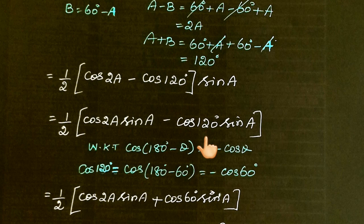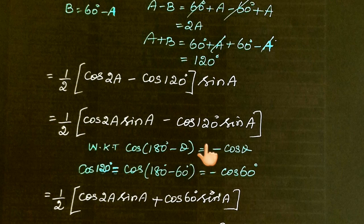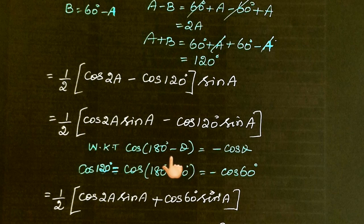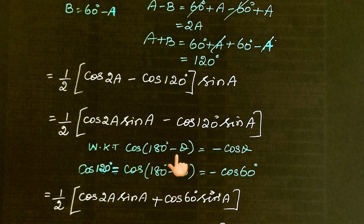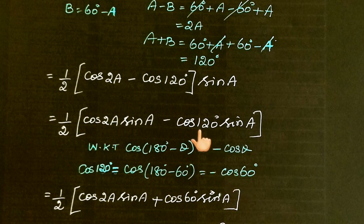We know trigonometric values for special angles: 0°, 30°, 45°, 60°, 90°. For cos(120°), we use the identity cos(180°-θ) = -cos(θ). So cos(120°) = cos(180°-60°) = -cos(60°). Therefore, -cos(120°) = -(-cos(60°)) = cos(60°).